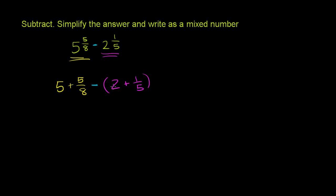Now if we're subtracting, that means we have to subtract the 2 and we're subtracting the 1 fifth, distributive property. So we get 5 plus 5 eighths minus 2 minus 1 fifth. And now we can rearrange it. We can say this is the same thing as 5 minus 2, that's the whole number parts, and then you have plus 5 eighths minus 1 fifth. Now 5 minus 2, that's just 3.